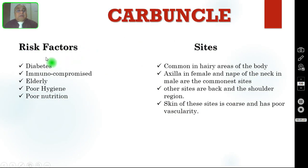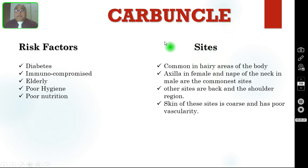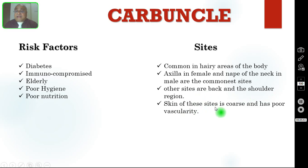The risk factors include diabetic patients, those who are immunocompromised, elderly patients, and patients who have very poor hygiene and poor nutrition — all these are risk factors for developing carbuncle. Coming to the sites: carbuncle is very common in hairy areas of the body because it is an infection of many hair follicles. The axilla in females and the nape of the neck in males are the commonest sites. Other sites are the back and shoulder regions. The skin of these sites is coarse and has very poor vascularity.